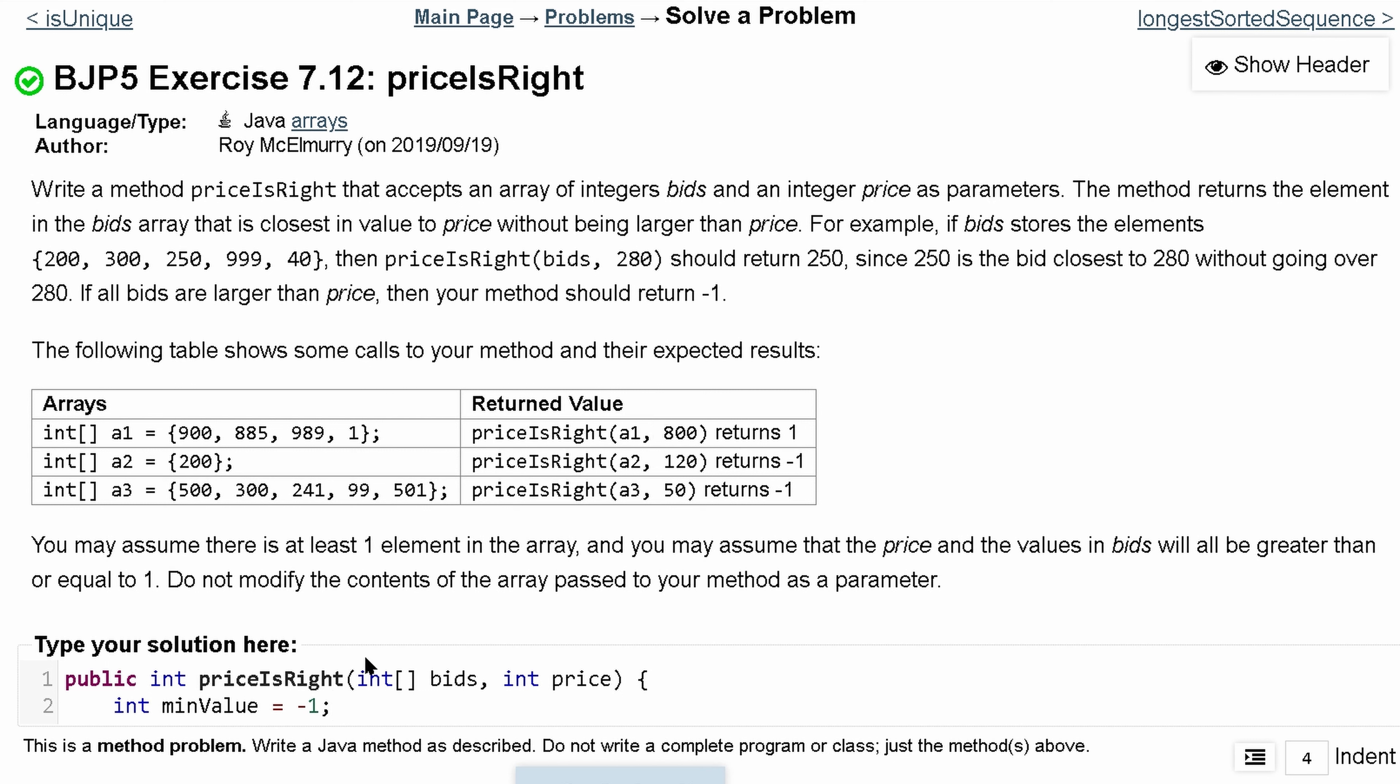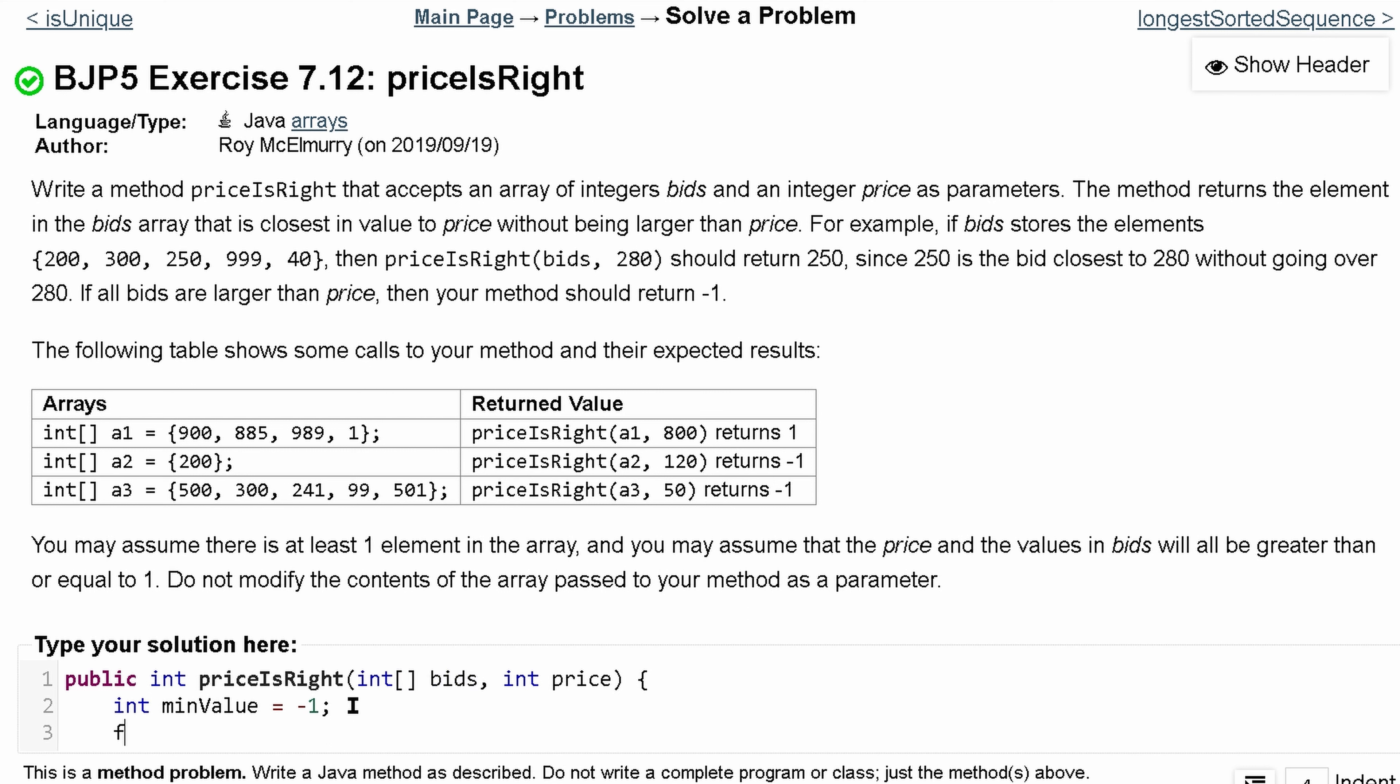Now, we're going to want to run through this. Whenever we have an array like this, and we want to do some kind of check or anything, you're always going to want to run through it. And the easiest way is to do a for loop, because when you do a for loop, you can start at the index zero and go all the way to the length. So a is equal to the bids.length.